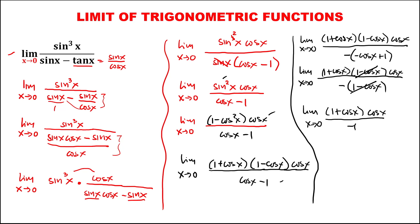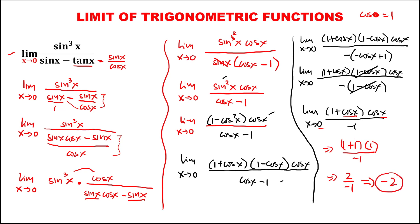As x approaches 0, since cosine x equals 1, we substitute: (1 plus 1) times 1 over negative 1. That gives us 2 times 1 over negative 1, which equals 2 over negative 1. Therefore, the limit is equal to negative 2.